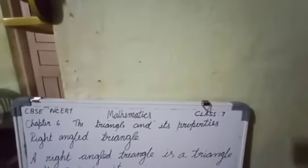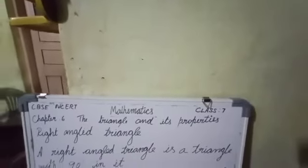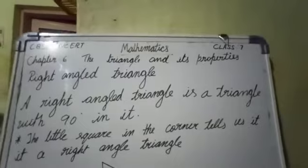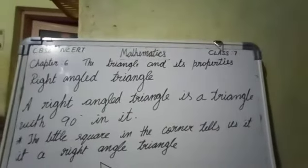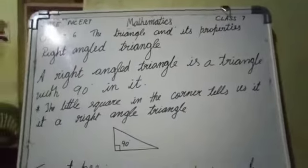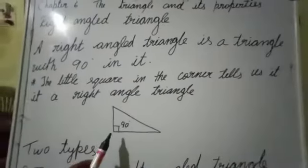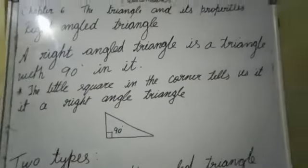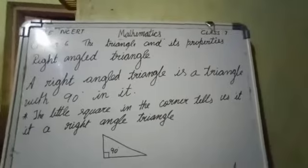A right angle triangle is one of the triangles with 90 degrees in it. But here, the little square in the corner tells us it is a right angle triangle. If there is only this square symbol, it indicates 90 degrees.